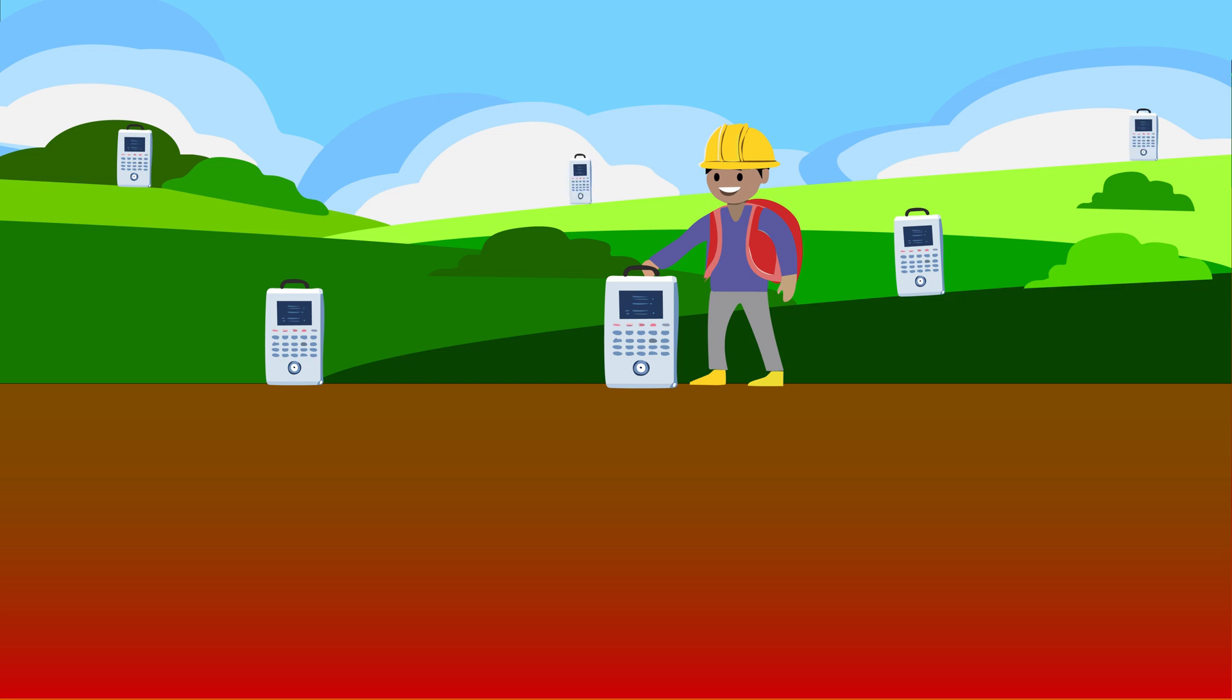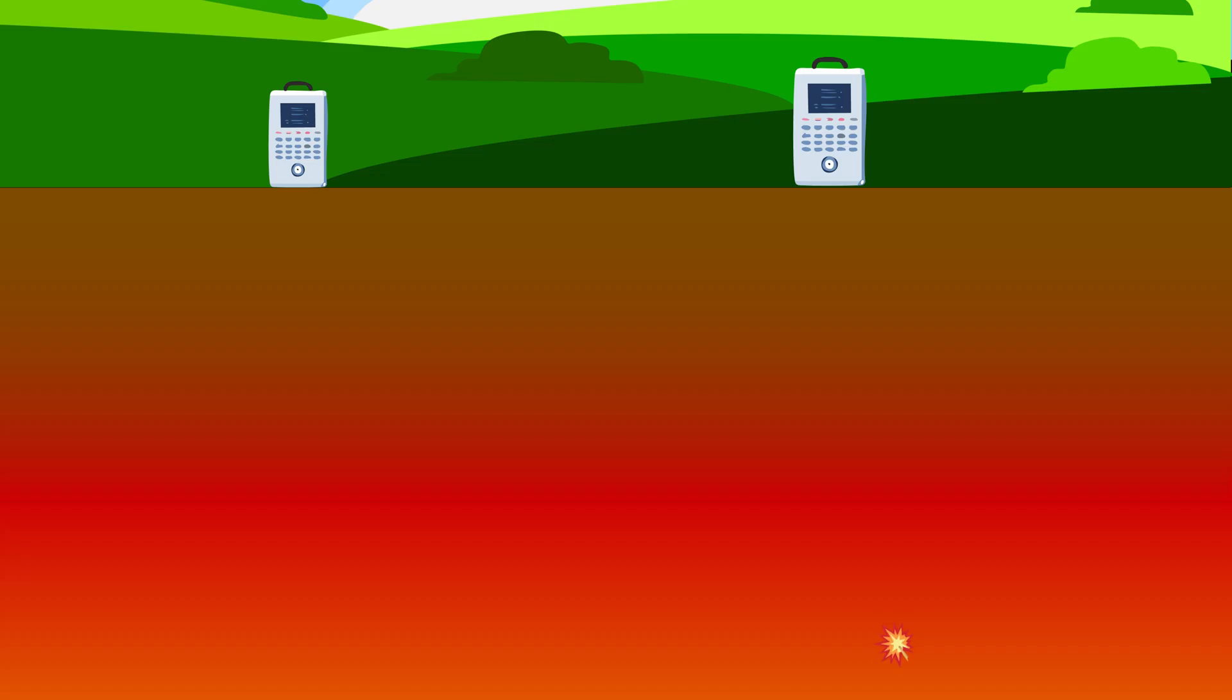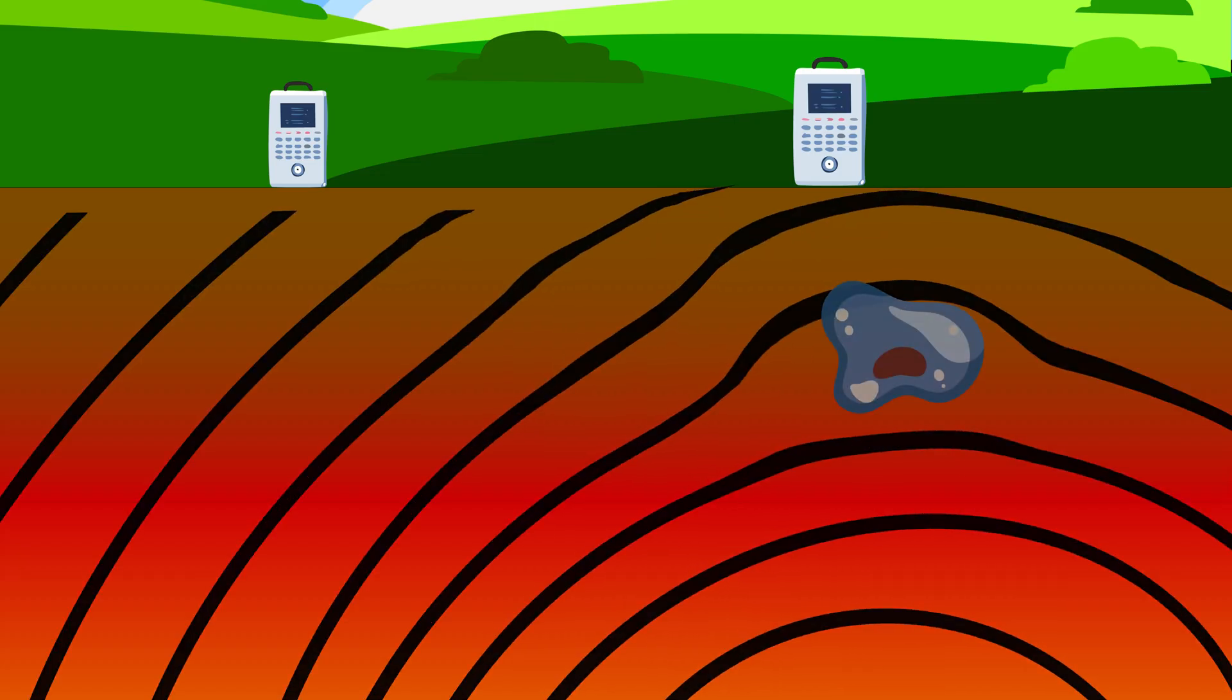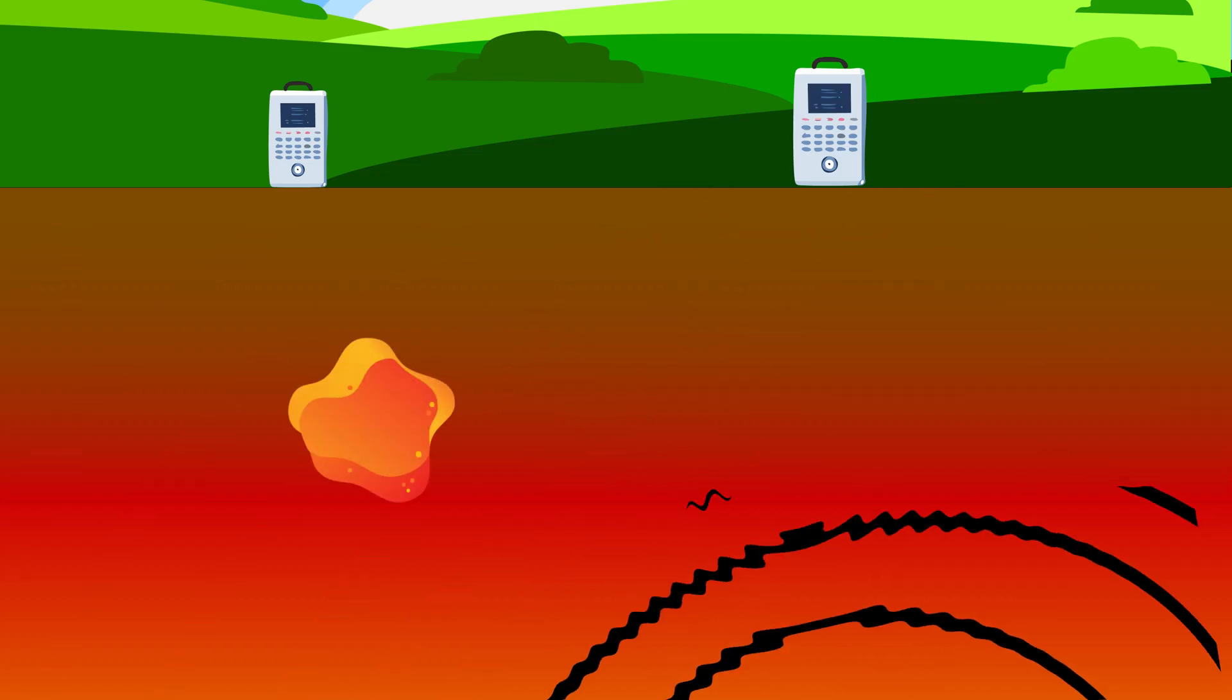Scientists place special instruments called seismometers in many locations to listen carefully to the shaking caused by earthquakes. When an earthquake happens, it sends waves of energy through the Earth. These energy waves move faster through cold, hard rock, and slower through hot, soft, or cracked rock.